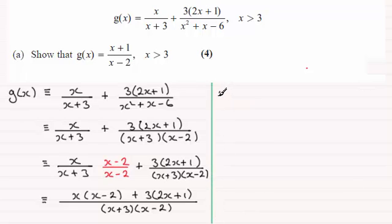So we've therefore got that g of x is identical to, and expanding the top here we've got x squared minus 2x.